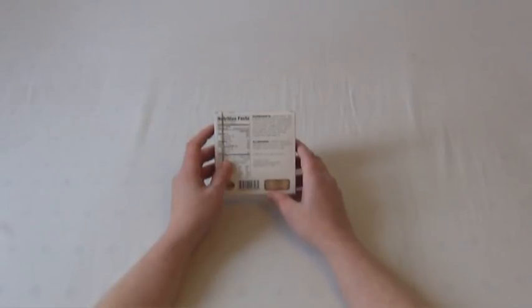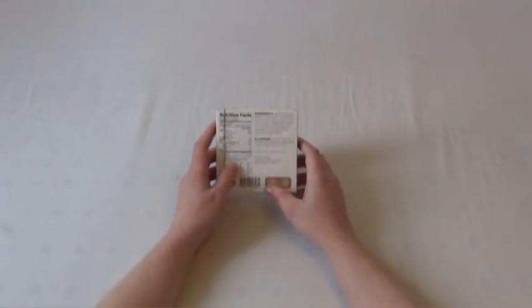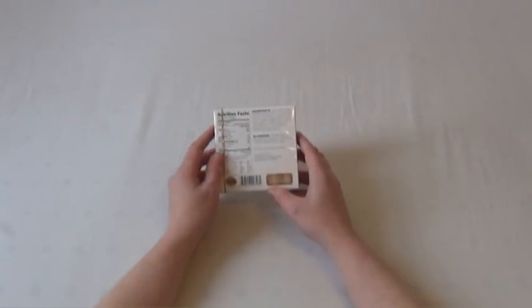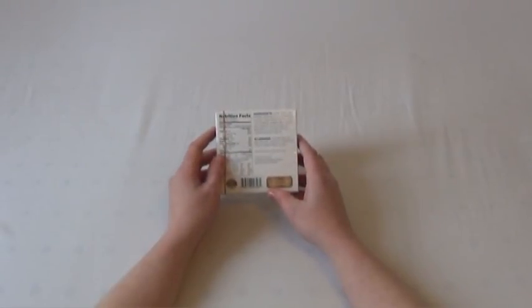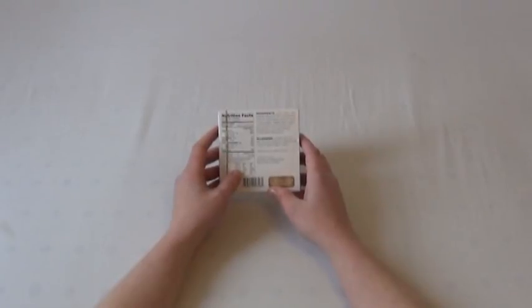It is produced in a facility where wheat is used and it says store in a cool and dry place to keep your chocolates nice and chocolatey, to keep the sugar crystals inside the chocolate very small, because if you heat and reheat chocolate it recrystallizes.